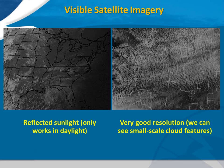Visible satellite imagery shows us what the satellite sees using sunlight that is either reflected off of or absorbed by the surface of the earth, or is reflected or absorbed by objects in the atmosphere such as clouds. Because visible imagery is dependent on sunlight, we can only use it during the day.